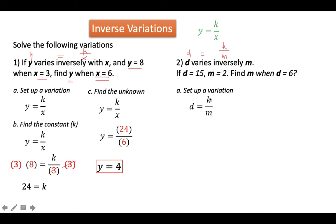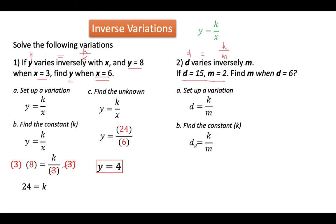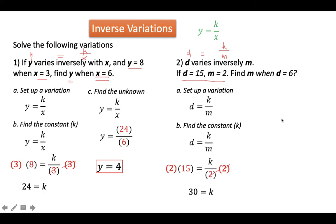We use this variation to find k. We replace d by 15 and m by 2. Then we solve for k by multiplying each side of the equation by 2 so that k is isolated. On the other side, 2 times 15 is 30. So k equals 30.